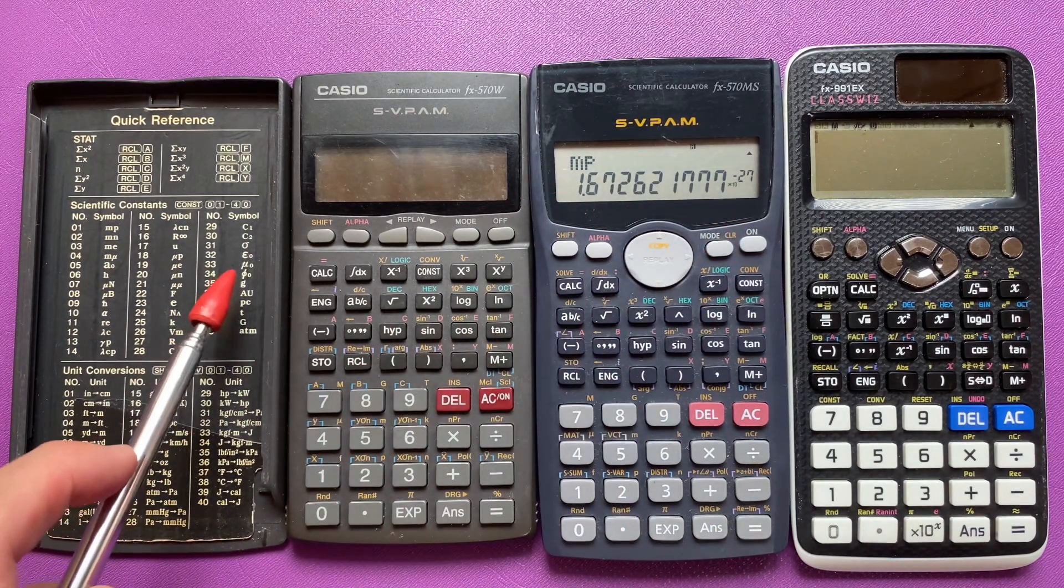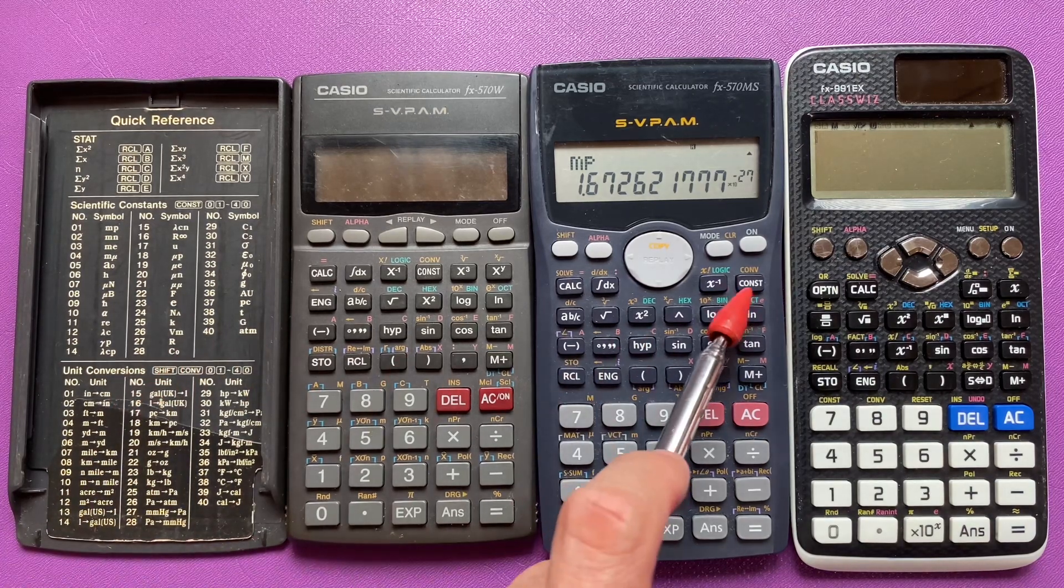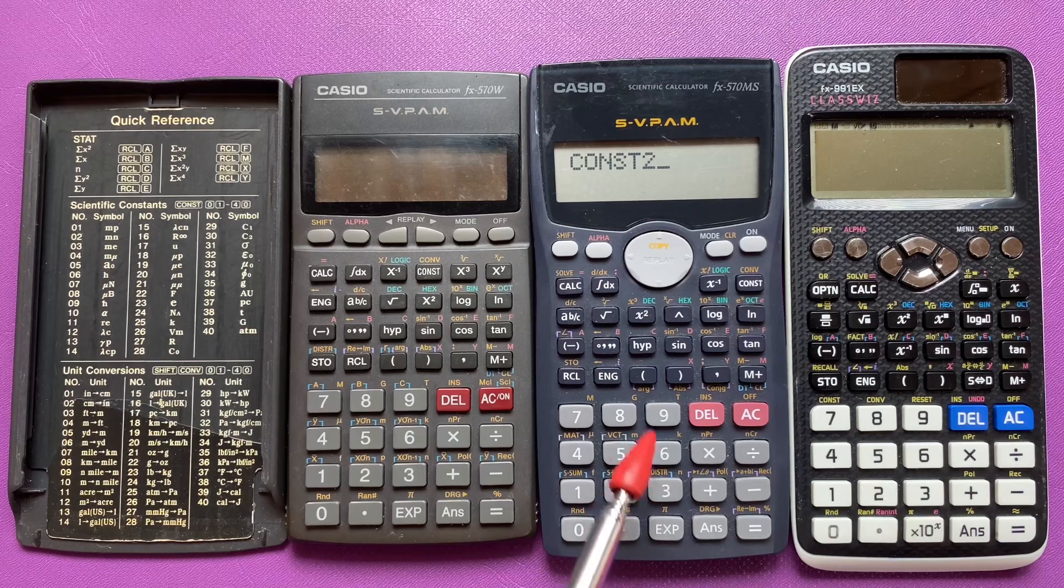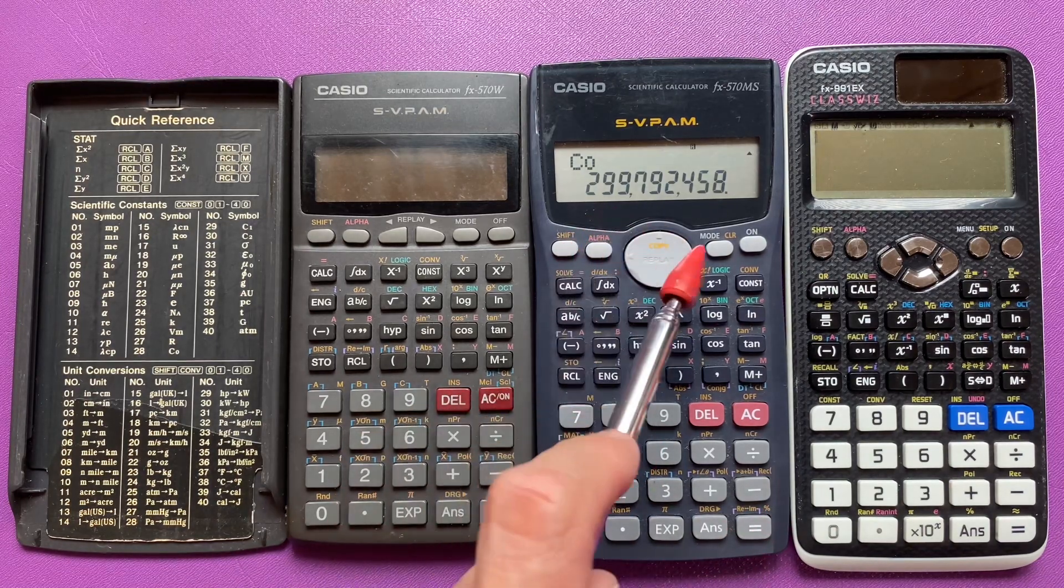Or perhaps speed of light, the universal constant. You press 'constant' and then choose 28, press 28 and press equal, and this is the speed of light.